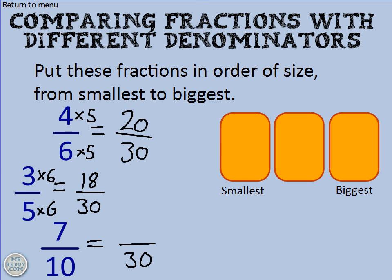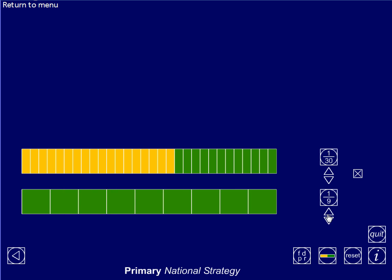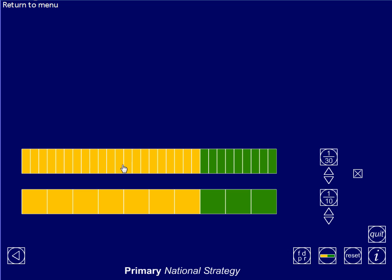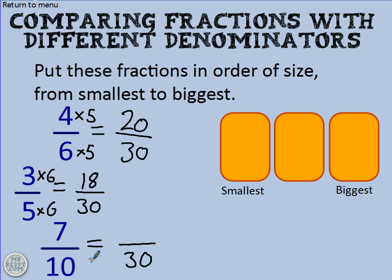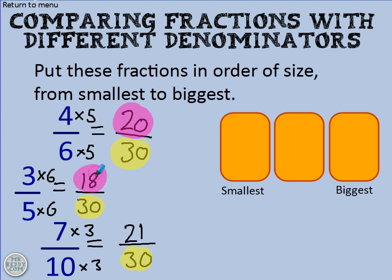Now we've got seven tenths to convert into thirtieths. The bottom bar is now changed into tenths, and I need seven of them: one, two, three, four, five, six, seven. That means I need 21 thirtieths to match the seven tenths — 21 thirtieths is equivalent to seven tenths. On your paper, figure out what you need to multiply ten by to make 30, which is three, and do the same to the top: seven times three equals 21. Now I've got three fractions all out of 30, and it makes it very easy to compare them — you just look at the numerators.